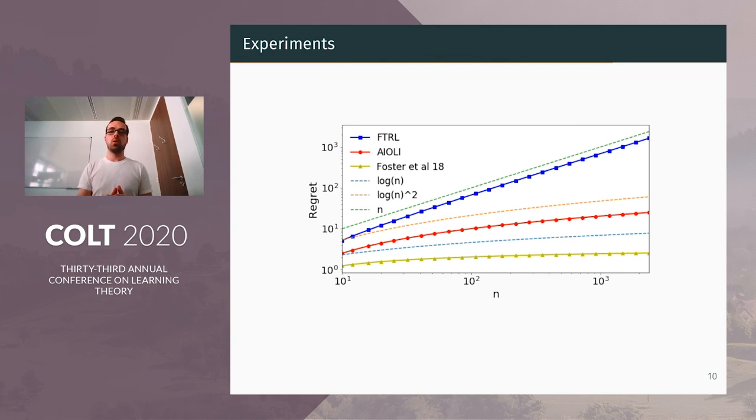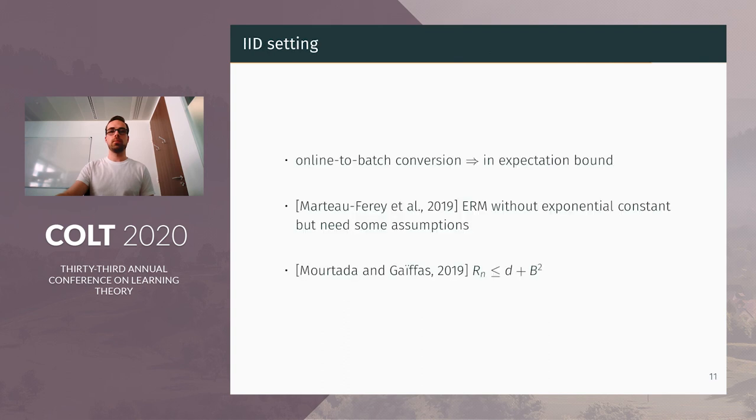To support our theoretical results, there were also some experiments in the IID setting, which is the same that has been used to show the lower bound of Azoury and Quotter, in the regime when B equals log n. We can see that the proper algorithm, like follow-the-regularized-leader, has indeed a polynomial regret. And the algorithm of Foster and Quotter has a logarithmic regret, maybe smaller. And our algorithm achieves a log n squared regret.